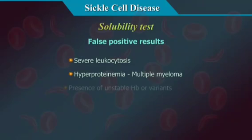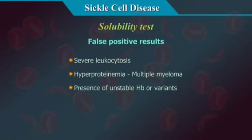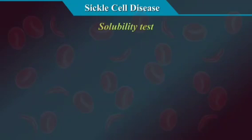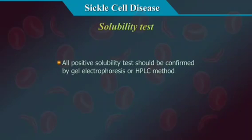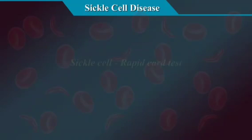In the presence of unstable hemoglobin or variants, all cases of positive sickle test should be confirmed by gel electrophoresis or HPLC method.